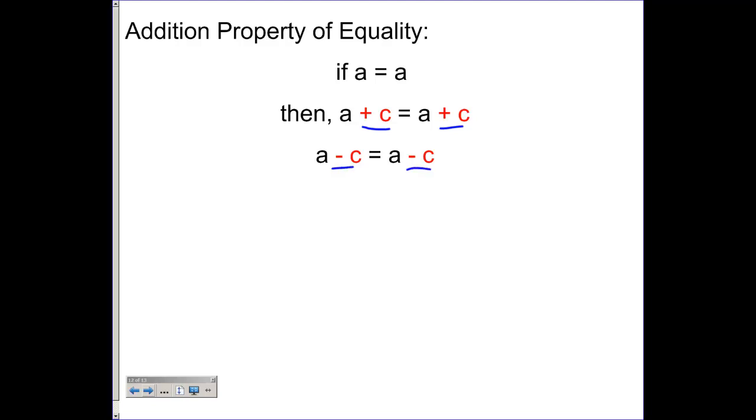the subtraction property of equality is really the addition property of equality. So I can do it with subtraction as well. If I start out with 5 equals 5, which we obviously know is true, and then I add some amount to each side and make sure that the amount I add on both sides is exactly the same,